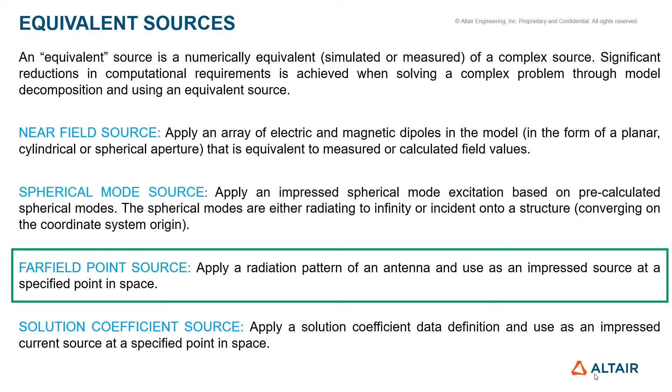Using the far field point source means we take the radiation pattern of an antenna and use it as a source at a specified point in space. We simulate the real antenna, get the radiation pattern, and export it to a far field FFE file — the native FFE file format in FEKO. That file is then imported into CAD FEKO in a separate session and used as a source in lieu of the real antenna. The resulting far field pattern will be exactly the same as the real horn antenna.